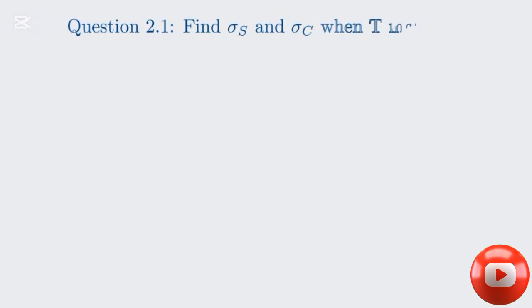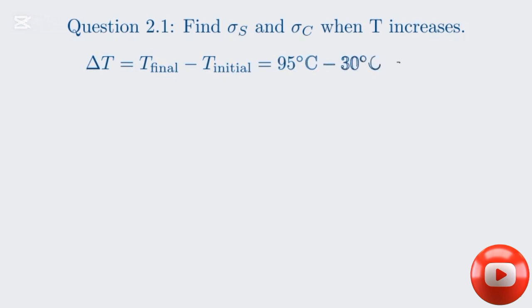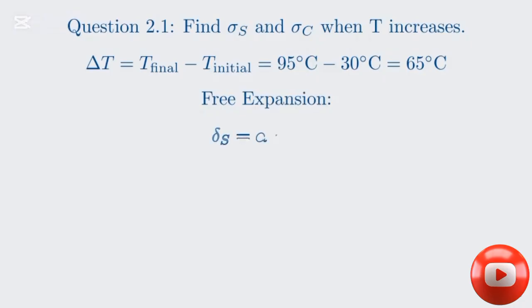Let's tackle Question 2.1: the magnitude and nature of the thermal stresses when the temperature is increased. We need to find the stresses in the steel and copper bars when the temperature rises. The first step is to calculate the change in temperature, delta T. The temperature change is the final temperature minus the initial temperature, so 95 degrees minus 30 degrees gives us a temperature change of 65 degrees Celsius.